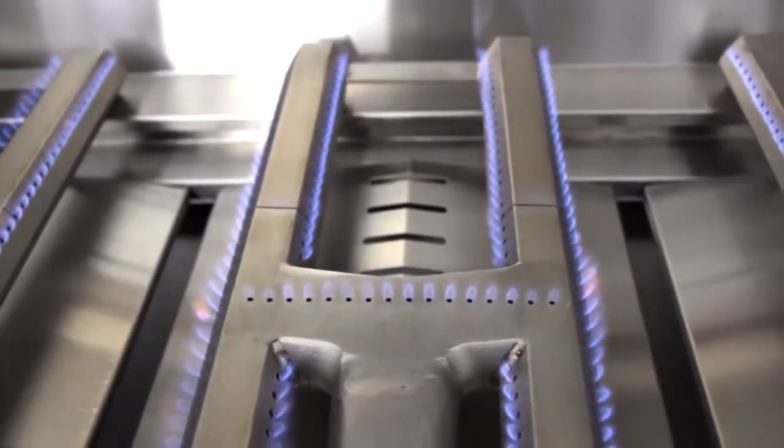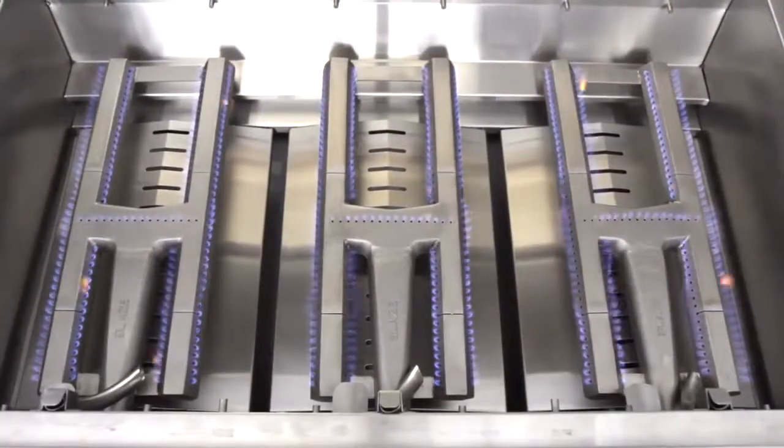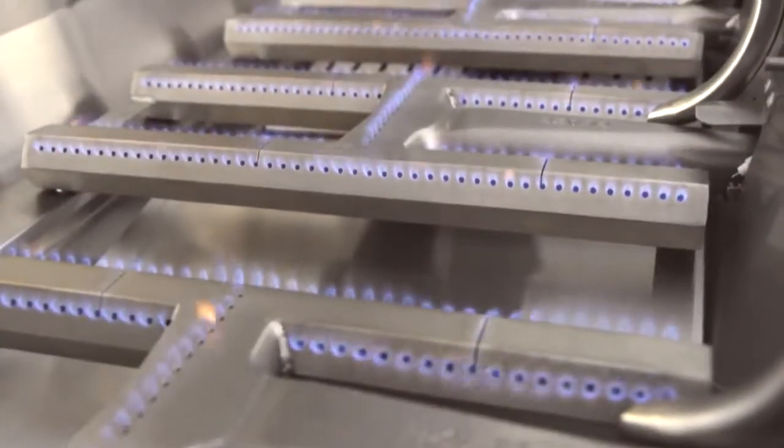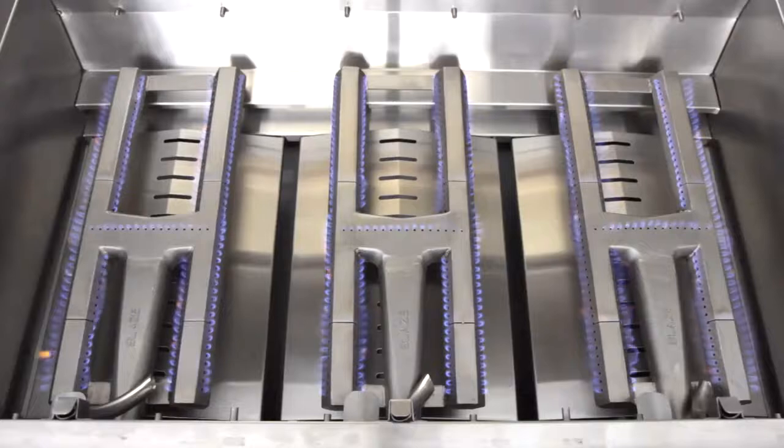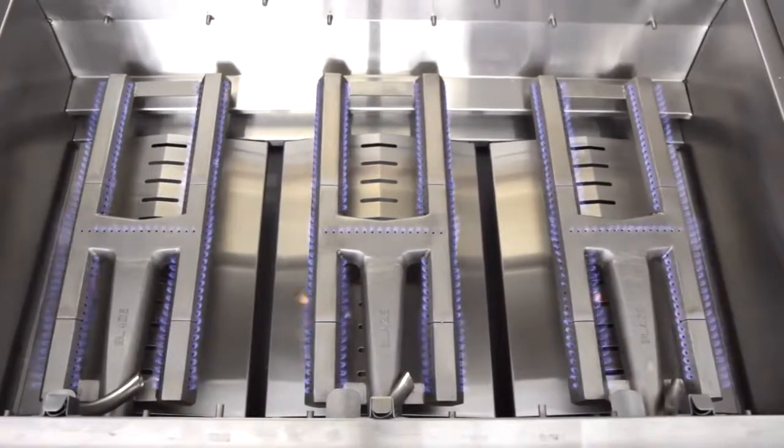The burners are rated for 18,000 BTUs each, delivering an impressive 54,000 total BTUs of cooking power. With all burners on high, this setup produces enough heat to conveniently sear things like steak or even tuna steak across the entire surface of the grill.